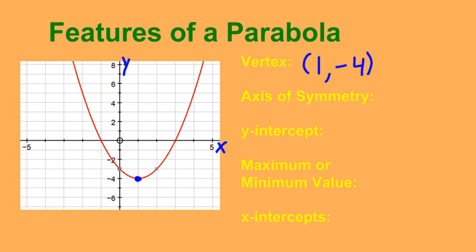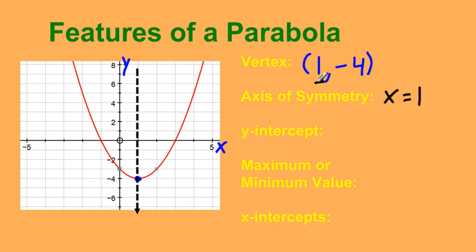The axis of symmetry is the line that cuts the parabola right in half. It takes the form x equals a value. Since the vertex is at x equals 1, the axis of symmetry is x equals 1 — the x-coordinate of the vertex. The y-intercept is where it crosses the y-axis, and reading the graph that value is y equals negative 3.